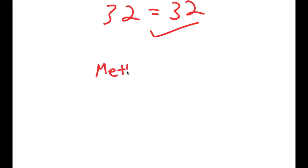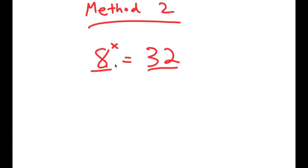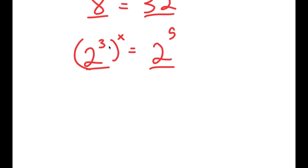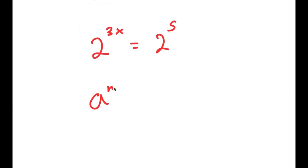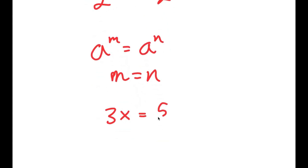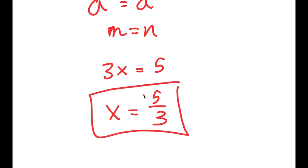I also have a second method of solving this problem. For the second method, we have the same equation, 8 to the power of x is equal to 32, and this is a simpler method. I'm going to start by rewriting both numbers: 8 as 2 to the power of 3, and 32 as 2 to the power of 5. So 2 to the power of 3 to the power of x equals 2 to the power of 3x, which equals 2 to the power of 5. Because the bases are the same, 3x is equal to 5, so x is equal to 5 over 3.